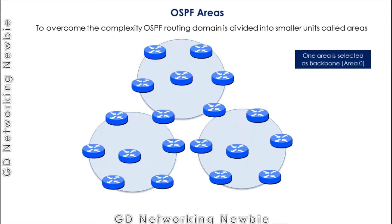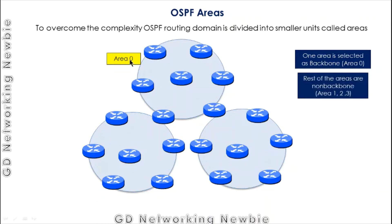One area out of all the areas is selected as the backbone area, known as Area 0. For example, one area is designated as the backbone area and named Area 0. The rest of the areas are non-backbone areas, and their numbers may start from one, two, three, and so on. Only Area 0 is assigned as the backbone area; all remaining areas are non-backbone areas.